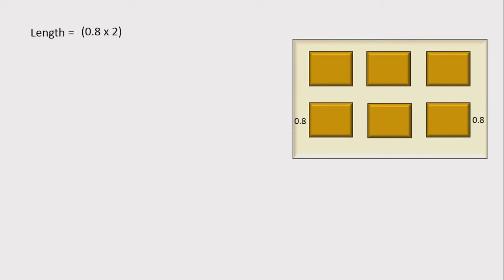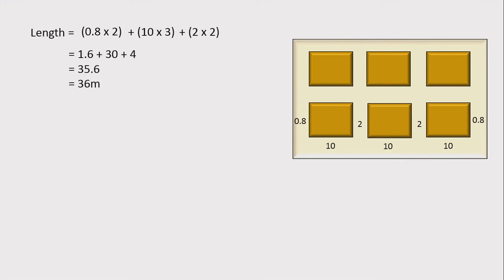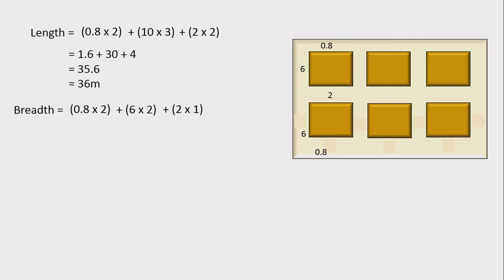The length is calculated as: (0.8 × 2) + (10 × 3) + (2 × 2) = 1.6 + 30 + 4 = 35.6 meters, rounded to 36 meters. Here, 0.8 is the wall-to-stack distance on both sides, 10 is the length of each stack with 3 stacks in a row, and 2 meters is the gap between stacks with 2 gaps. The breadth is: (0.8 × 2) + (6 × 2) + (2 × 1) = 1.6 + 12 + 2 = 16 meters.